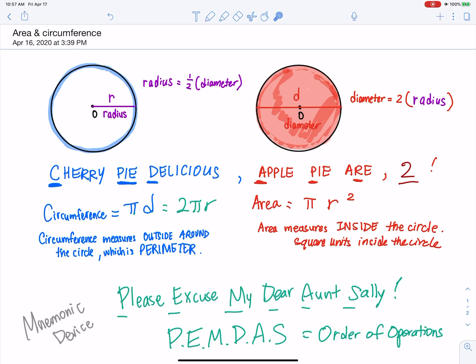Okay, there's one more thing. Radius is half diameter. Diameter is double radius. Radius is half diameter. Diameter is double radius.